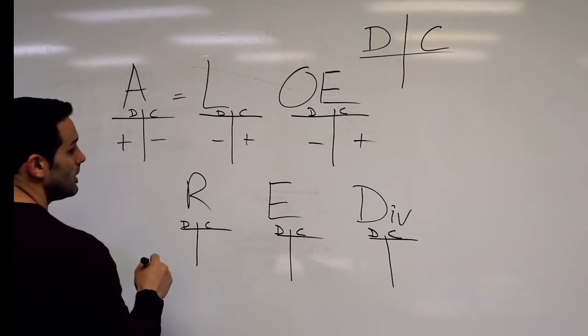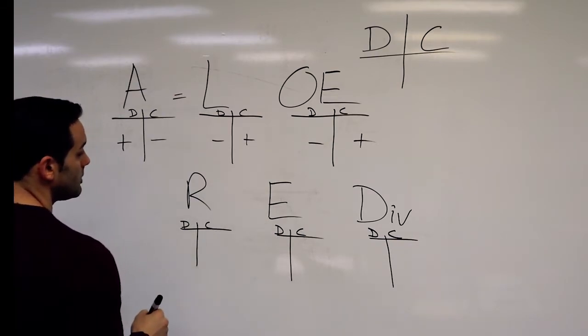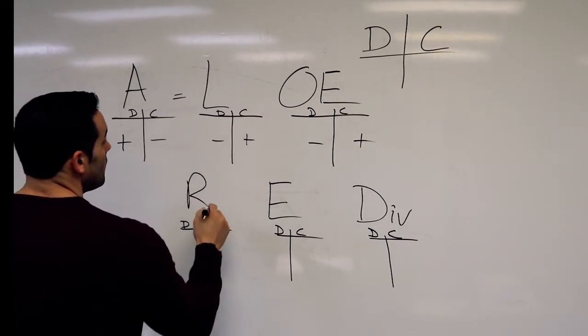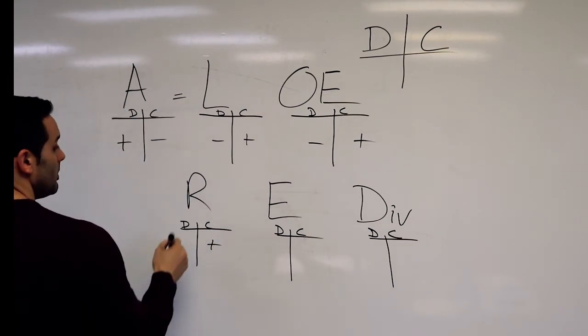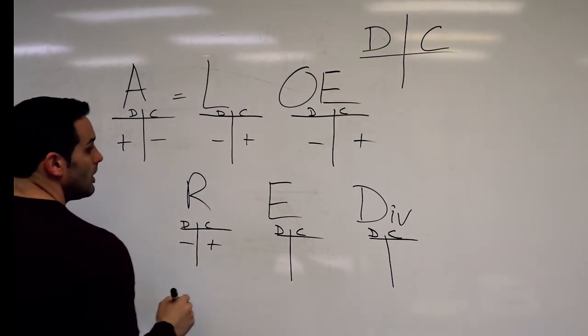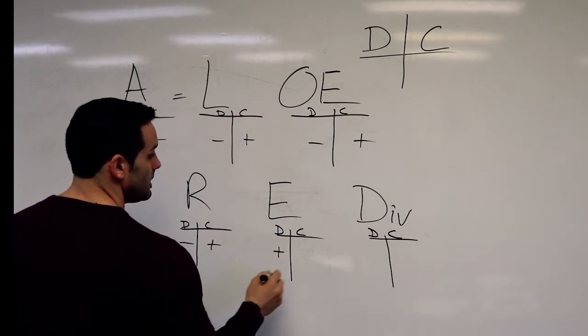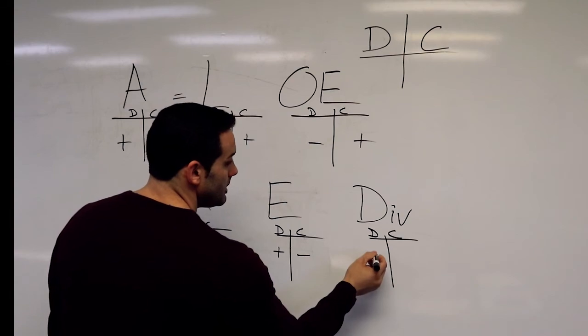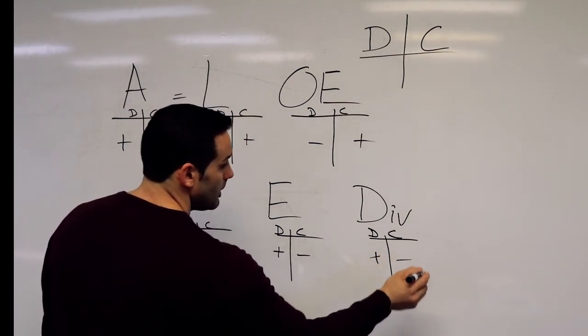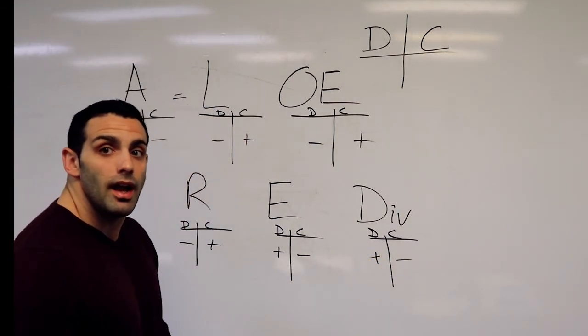Revenues, expenses, dividends. So revenues follow liabilities. Expenses are the opposite. Expenses increase with a debit. And dividends follow the expenses. And we're out.